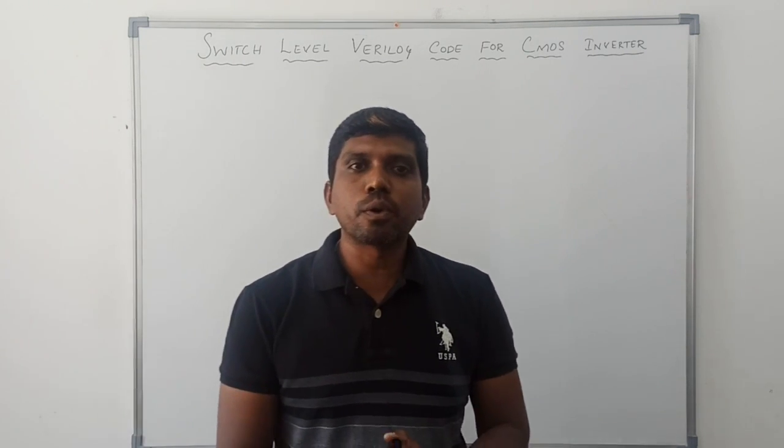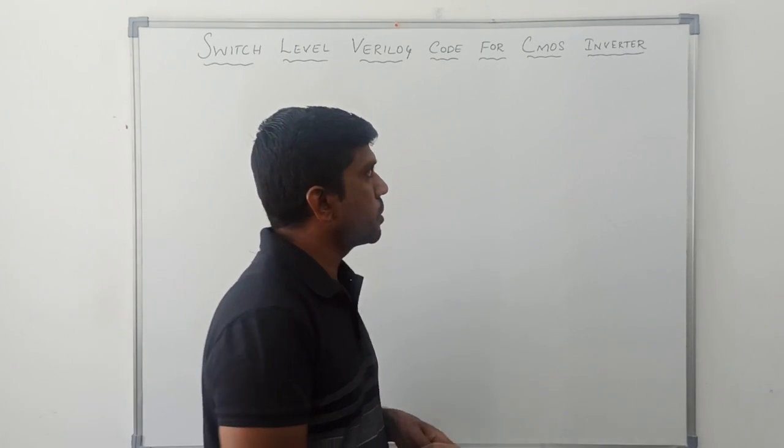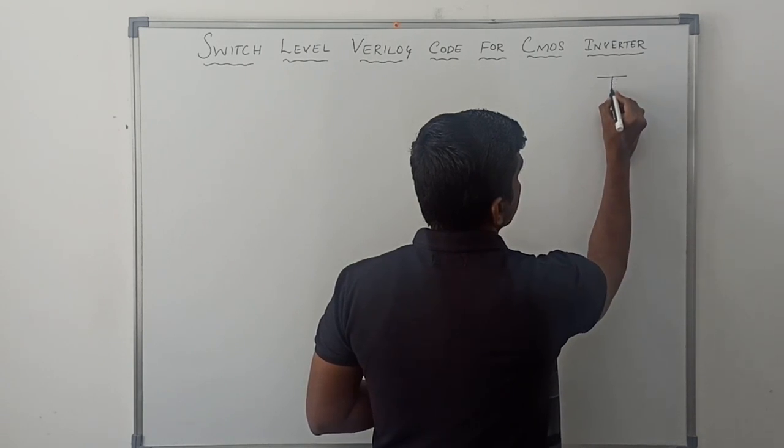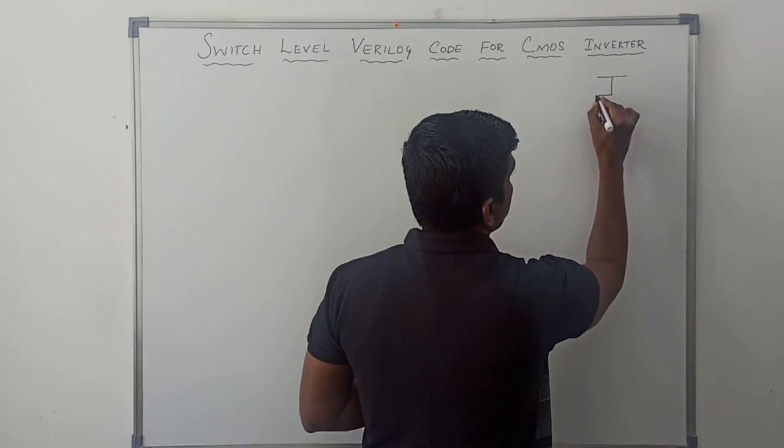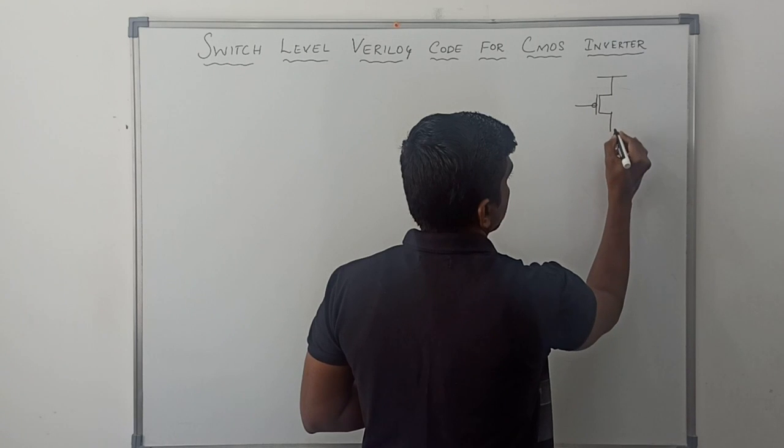Before writing the program, I'll first draw the CMOS inverter circuit. This CMOS inverter circuit consists of two transistors: PMOS transistor and NMOS transistor.